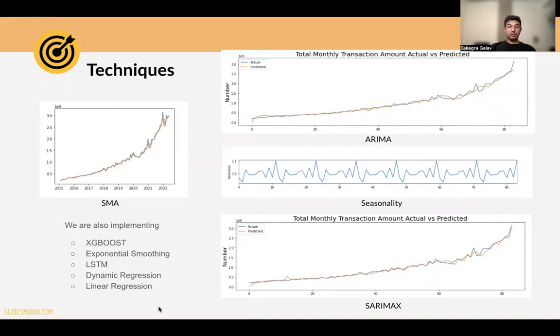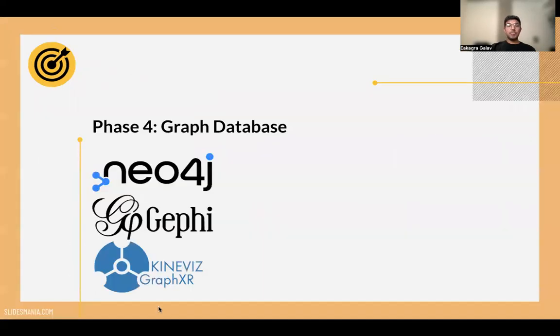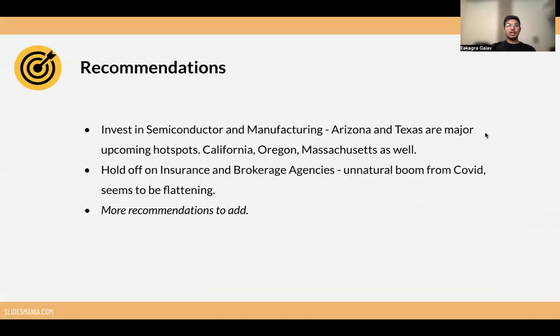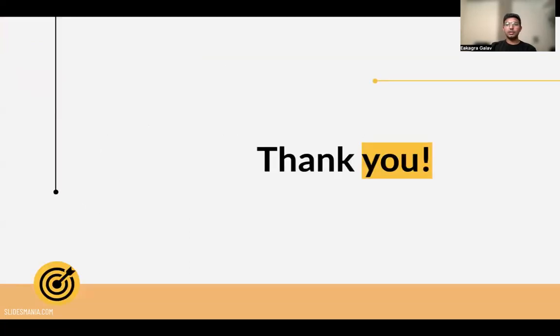This is a quick glance of the graph visualization that we are planning to do and working on. These are the recommendations that we made: they should invest more in semiconductor, and for insurance they should hold on it. Let's hope we come up with better recommendations in the coming days. Thank you.